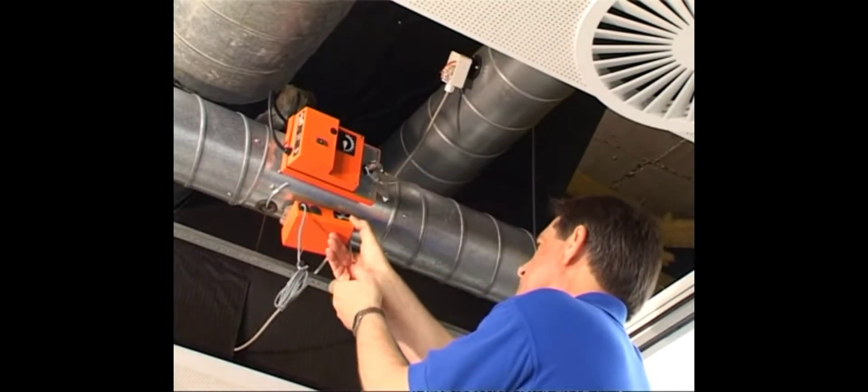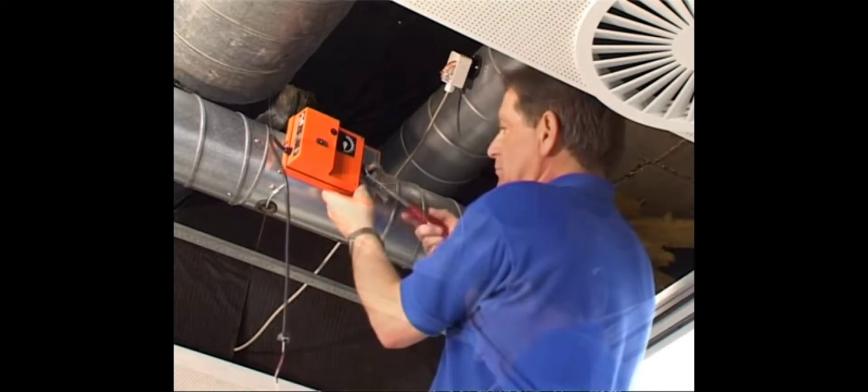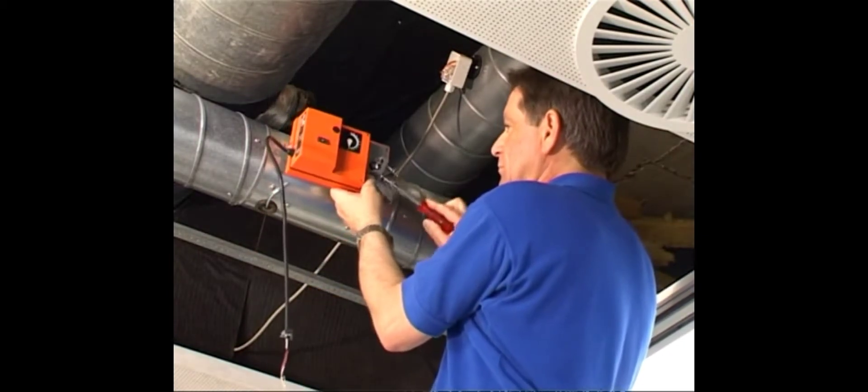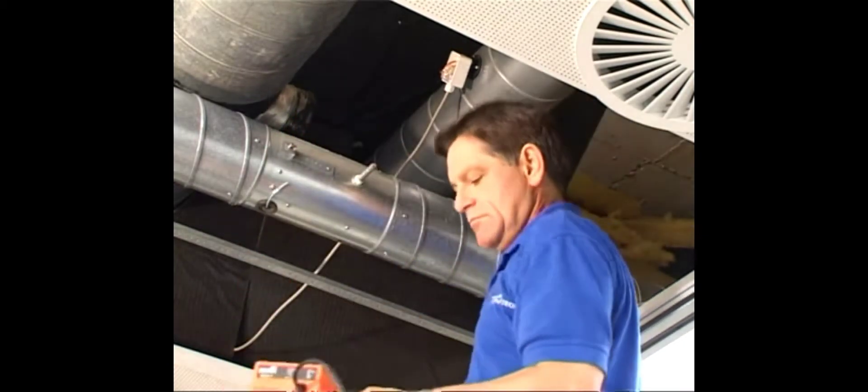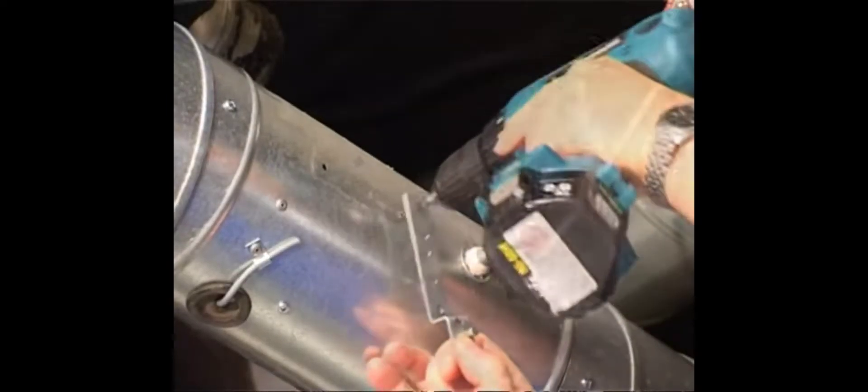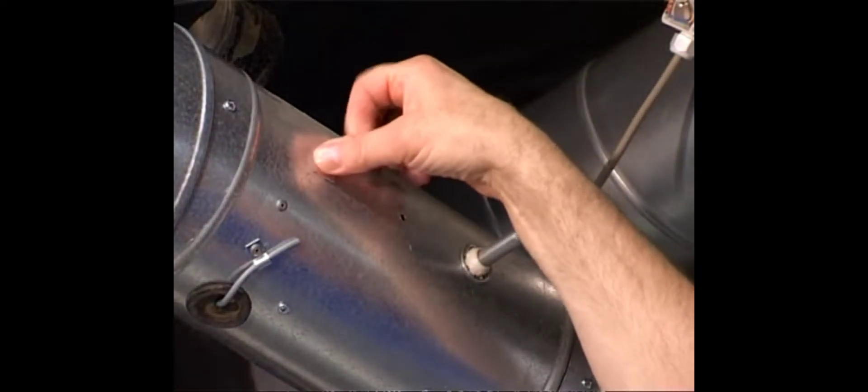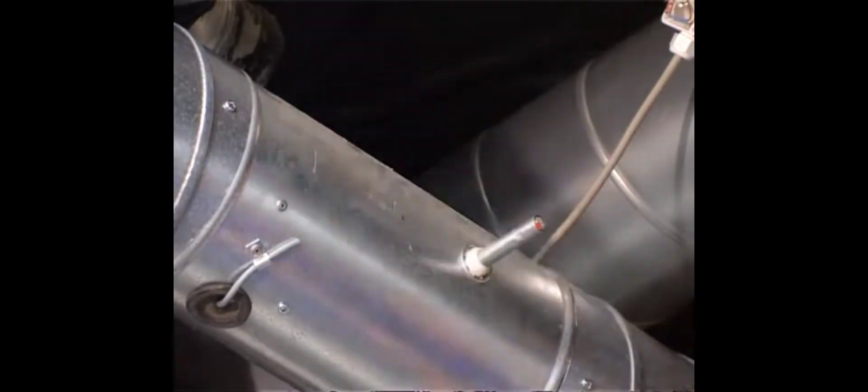Then the old control units and potential other components have to be removed. In order to avoid whistling noises, no longer necessary boreholes should be closed in the duct system.